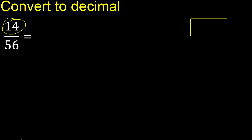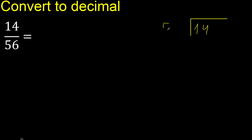14 divided by 56. 14 is less, therefore complete — always complete with 0. Here, 0 point.